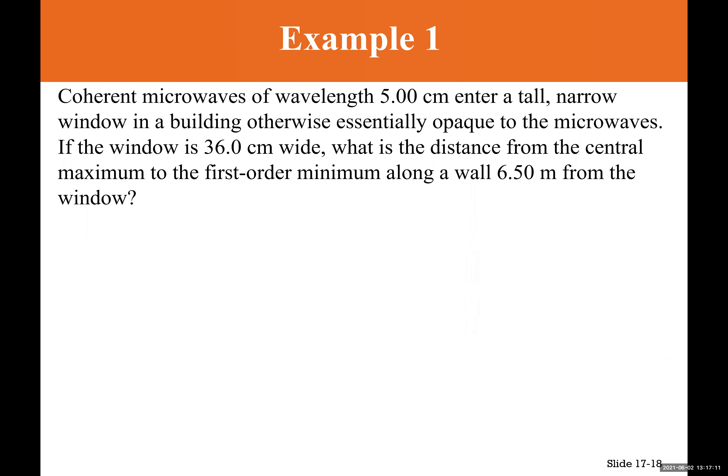To summarize the key differences: for double slit, we calculate both dark and bright fringes, and m = 0 exists for dark fringes. For single slit, we only calculate dark fringes, there is no m = 0 for dark fringes, and we don't calculate bright fringes unless finding the width of the central maximum.